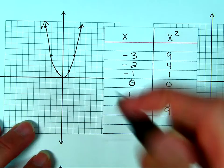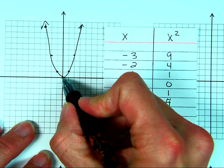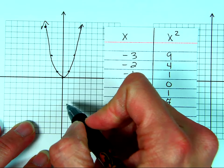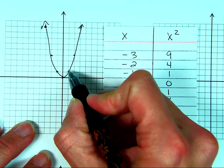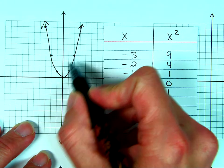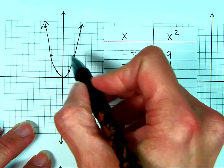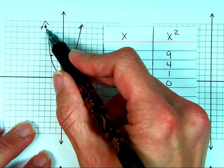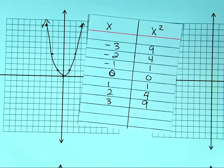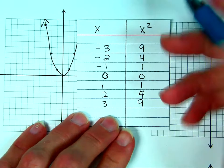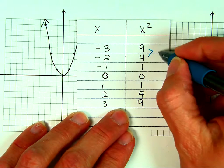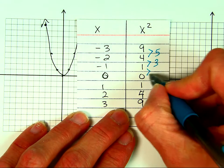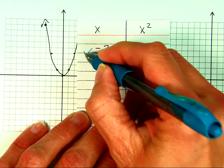Now notice the pattern. From the vertex, I went over 1 and up 1 to the right, and over 1 and up 1 to the left. From that point, I went over 1 and up 3, over 1 and up 3. And then from this point, over 1 up 5, over 1 up 5. This distance is 5, this distance is 3, this distance is 1.